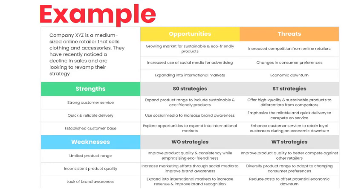SO strategies — leverage strengths and opportunities: expand product range to include sustainable and eco-friendly products, use social media to increase brand awareness, explore opportunities to expand into international markets. WO strategies — address weaknesses and leverage opportunities: improve product quality and consistency while emphasising eco-friendliness, increase marketing efforts through social media to improve brand awareness, expand into international markets to increase revenue and improve brand recognition.